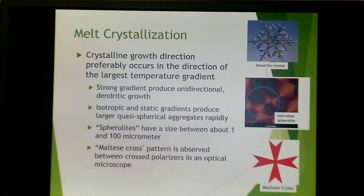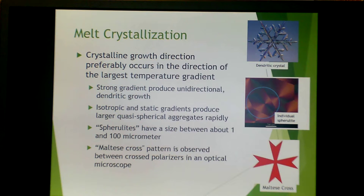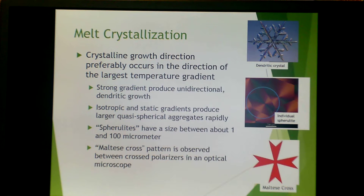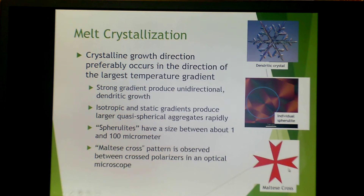For melt crystallization, crystal growth tends to happen in the direction of the largest temperature gradient. A strong gradient produces unidirectional dendritic-type growth. Isotropic and static gradients produce larger quasi-spherical aggregates rapidly. These are called spherulites, and they tend to have a size between about 1 and 10 micrometers. They are often called Maltese crosses because of their similarity to the traditional Maltese cross shape when seen in an optical microscope under cross polarizers.